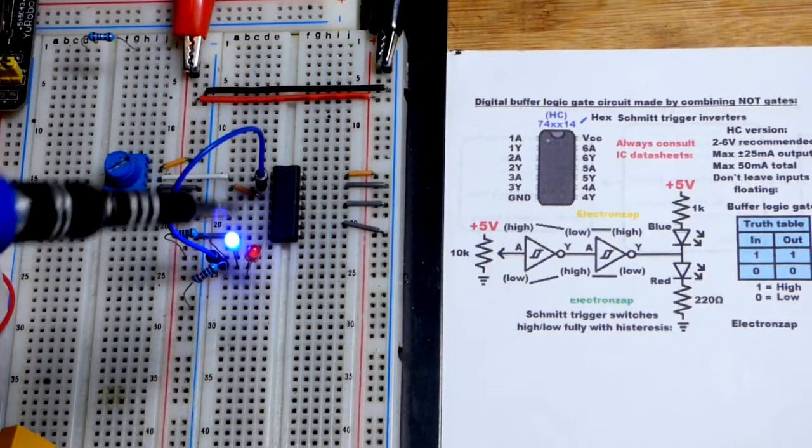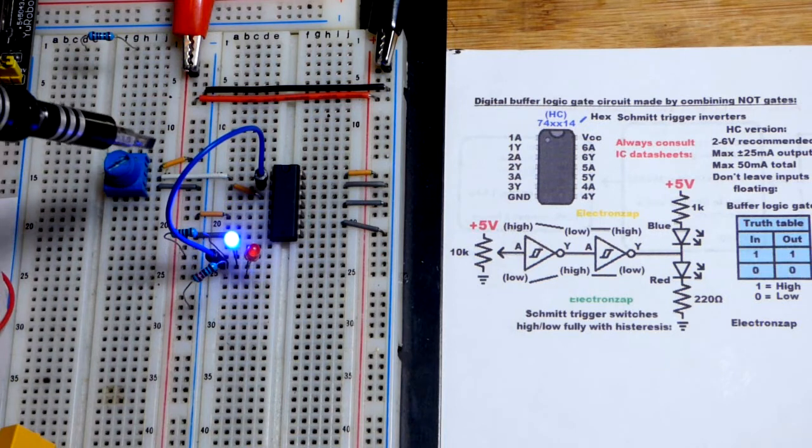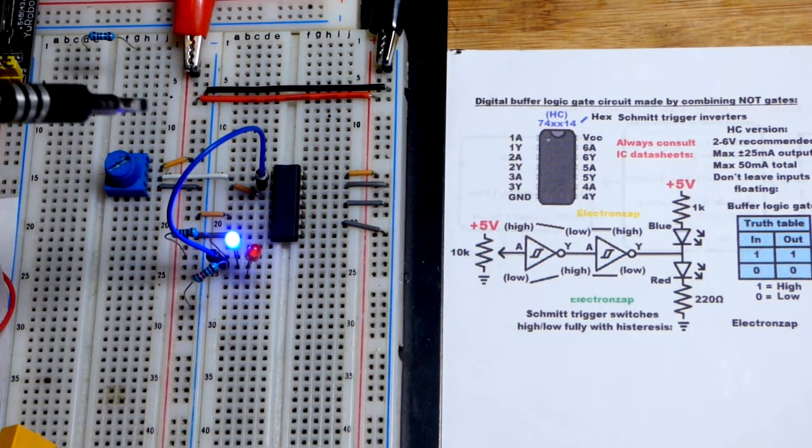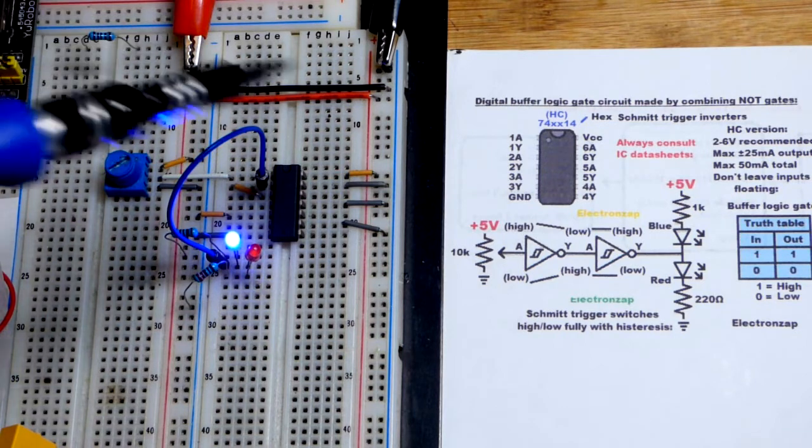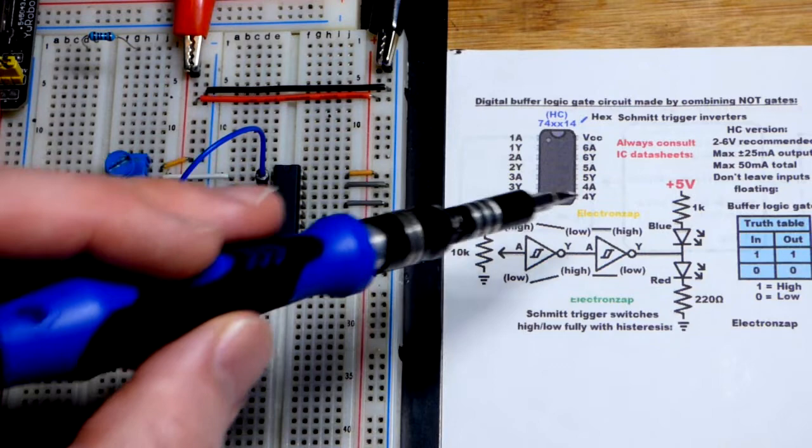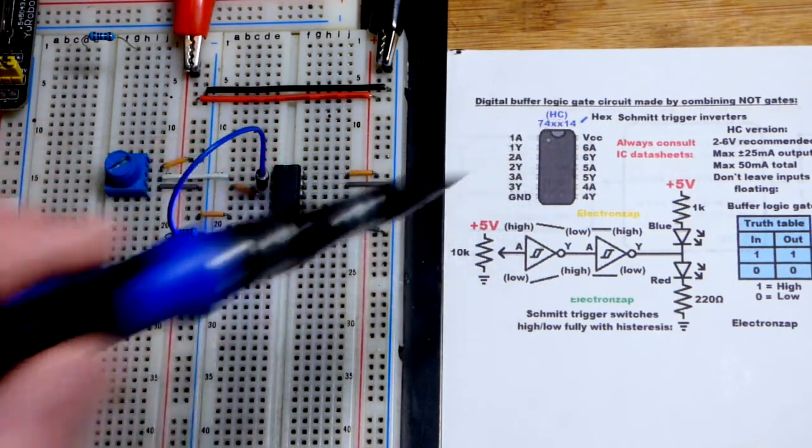For this video, I would like an integrated circuit that is a digital buffer where a high input will give a high output, but I don't have an integrated circuit that is a digital buffer. I do have this inverter here with six NOT gates—that's a 7414 integrated circuit, the high-speed CMOS version.